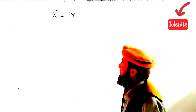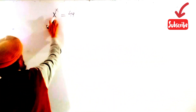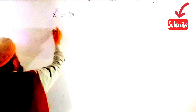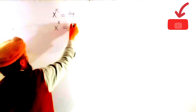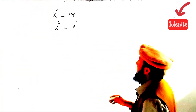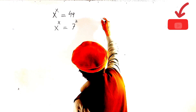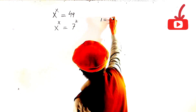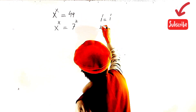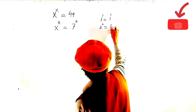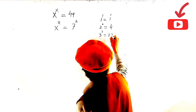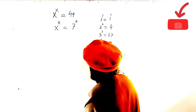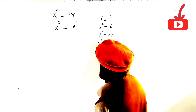First of all, we simplify this function. We can write x^x = 7². Now, following the pattern: 1^1 = 1, 2^2 = 4, 3^3 = 27, and 4^4 = 256.